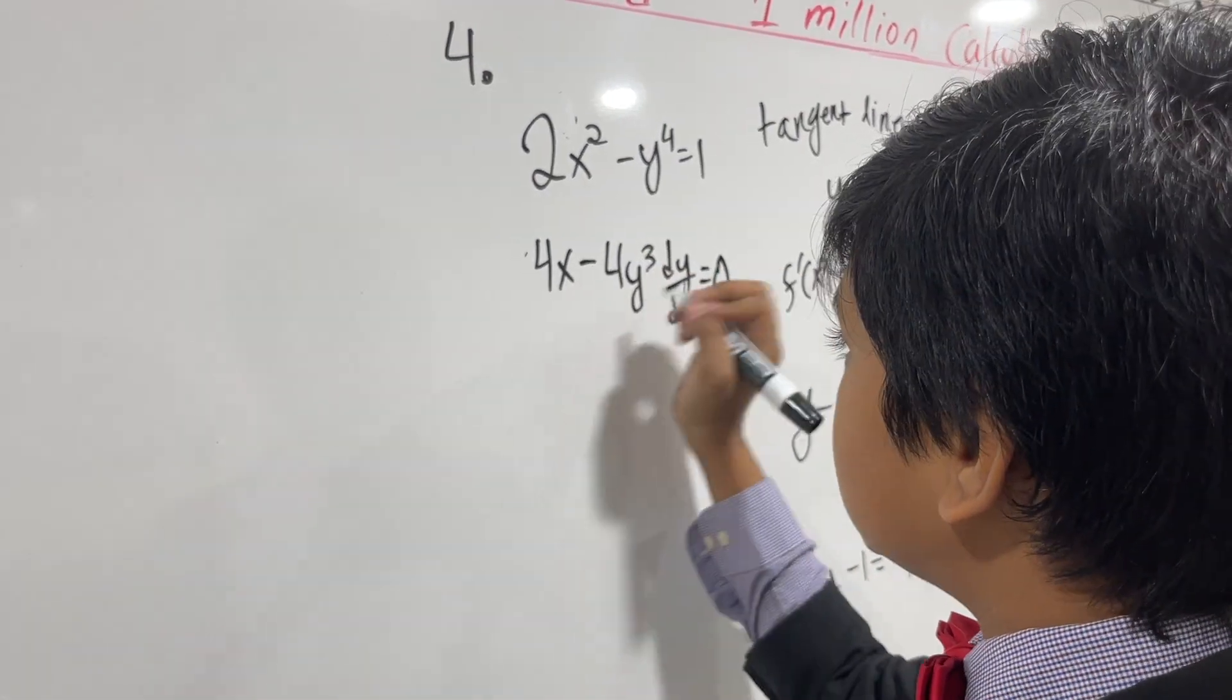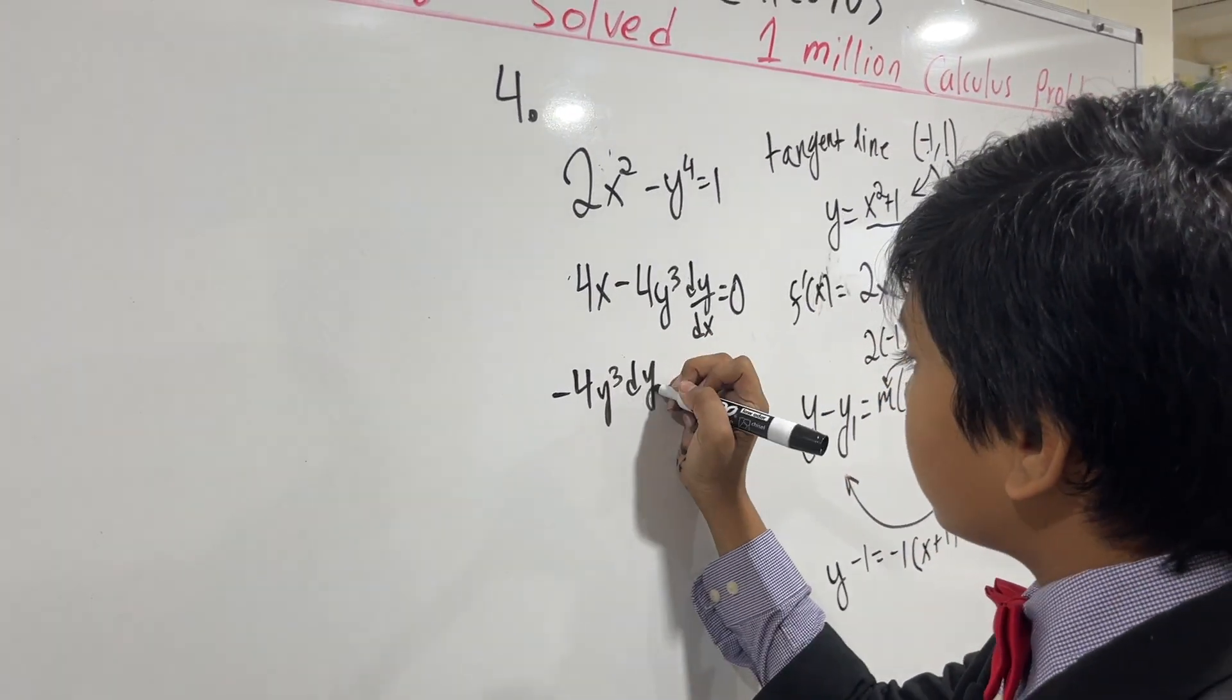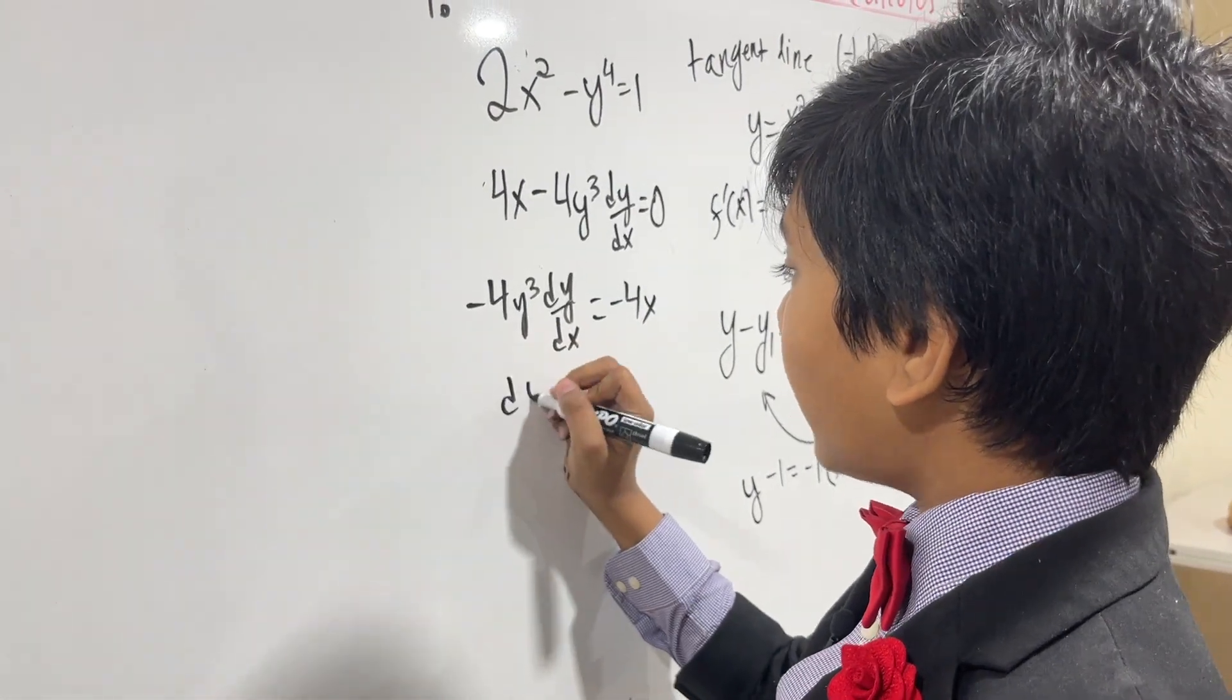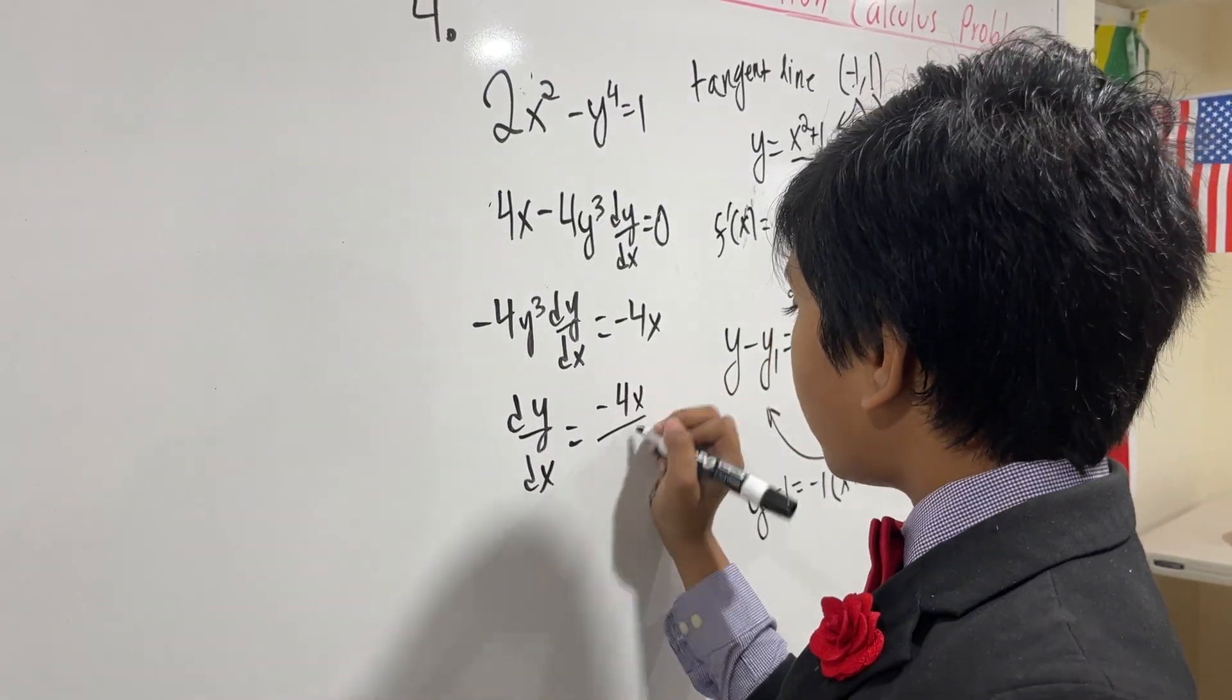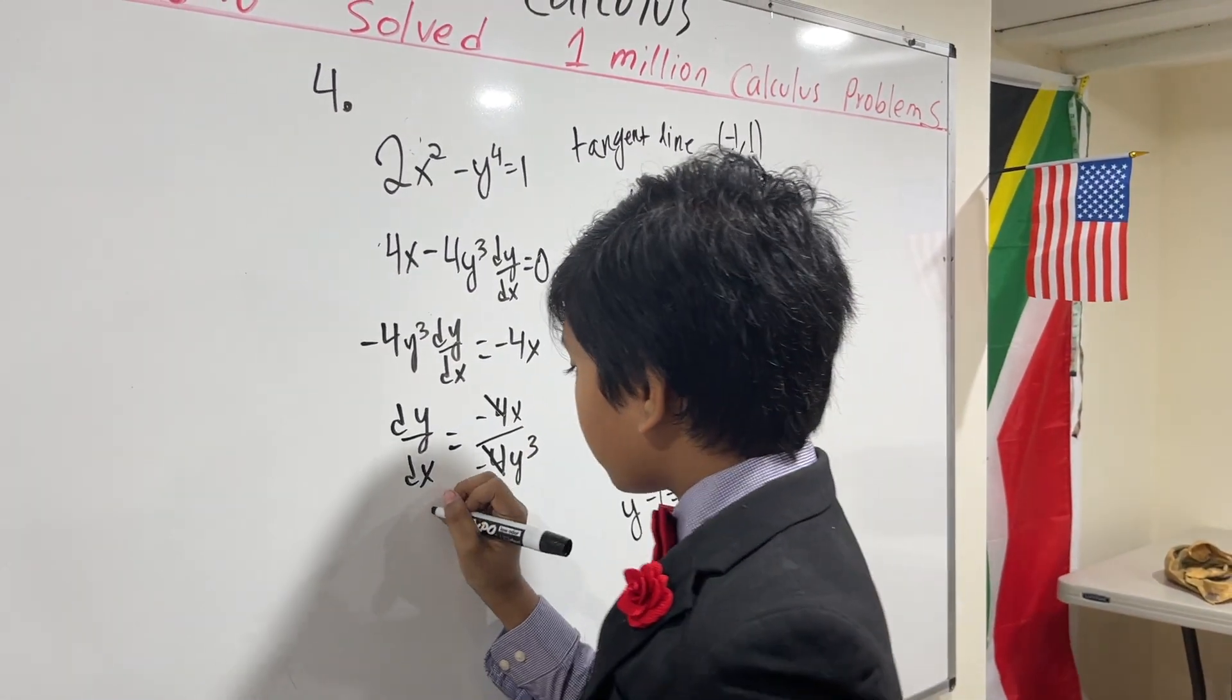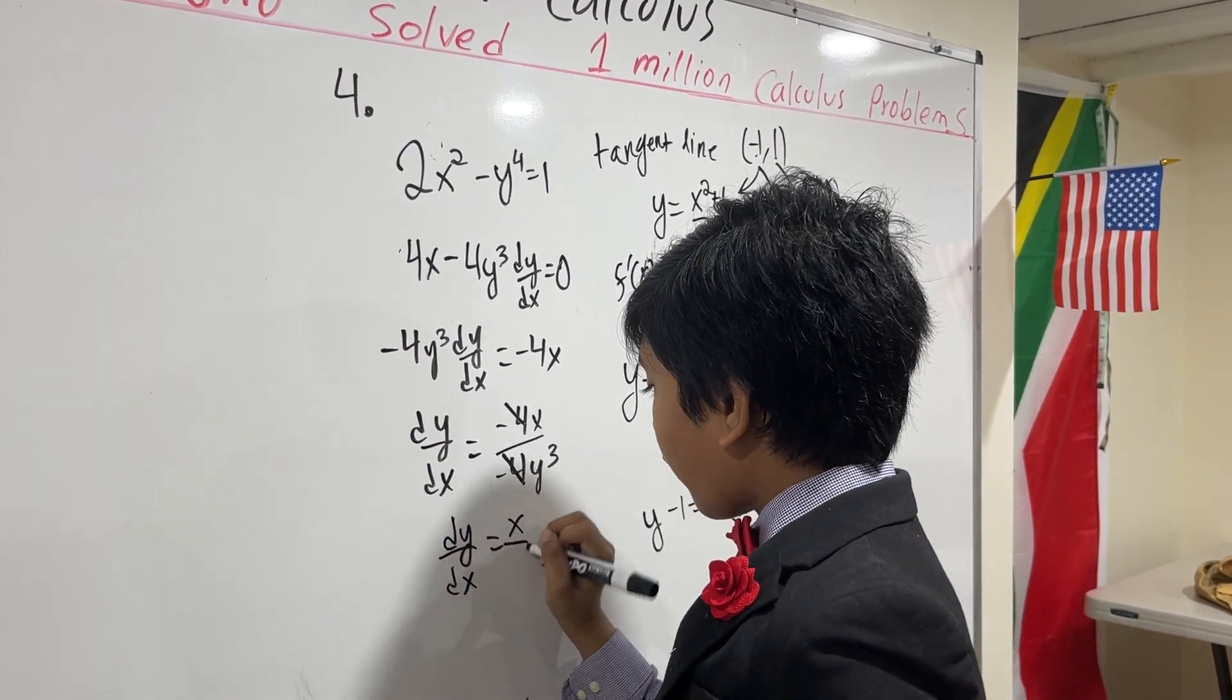So, bringing the 4x to the other side, we get minus 4y cubed, dy over dx is equal to minus 4x. And this is quite convenient now, we get dy over dx is minus 4x over minus 4y cubed. So, canceling this out, we get dy over dx is x over y cubed.